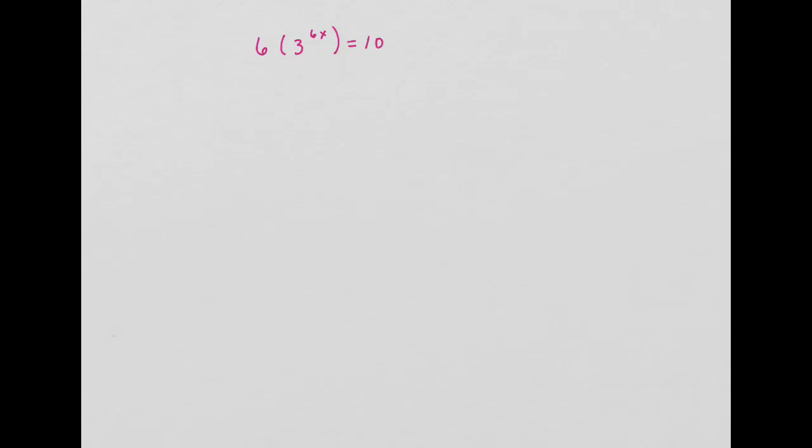To solve a problem like this, the first thing we need to do is divide both sides by 6. We want to get the exponent alone.